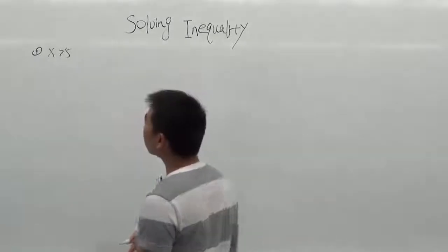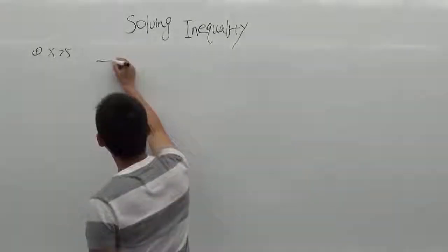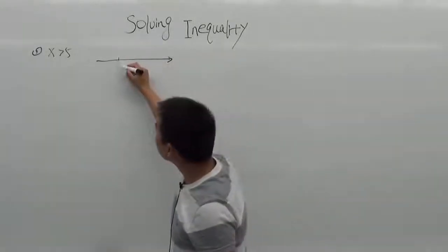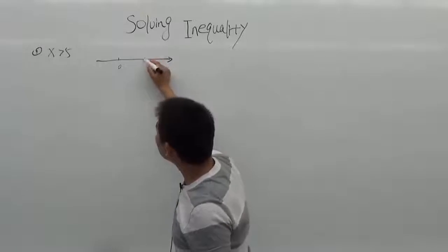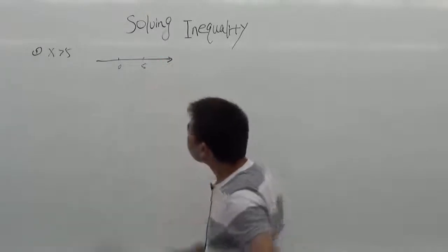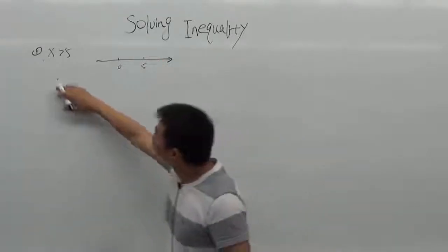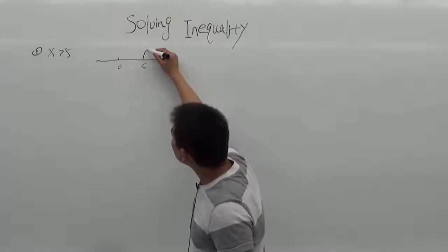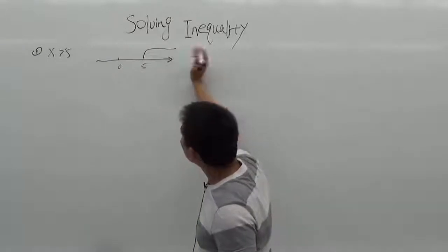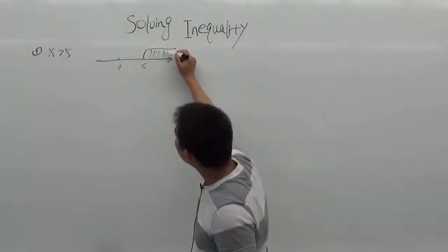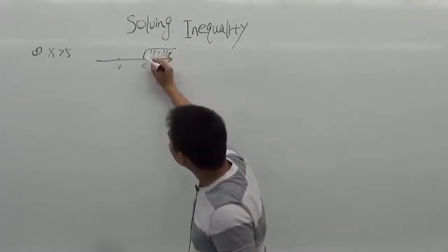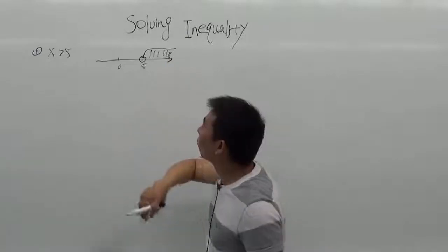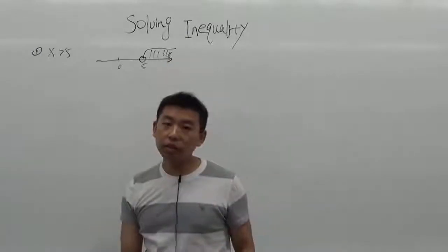What does it mean that x is greater than 5? We can look at a number line — here is 0, here is number 5. x is greater than 5, which means all the numbers on the right side of number 5, but does not include number 5.